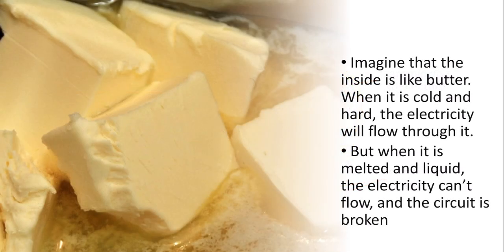Imagine that the inside of the TTB is made of butter. When it's cold and hard, the electricity flows through it without a problem. But when you warm it, and it melts, then the electricity can't flow, and the whole electrical circuit, which keeps the flame alive, is broken.